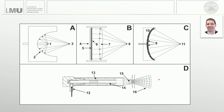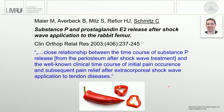With radial shockwaves, it's completely different — it's pretty much an air gun. The key difference is that the projectile does not leave the guiding tube, but strikes a metal applicator, causing a stress wave in the metal applicator, which is then transmitted as a radial shockwave into the tissue.